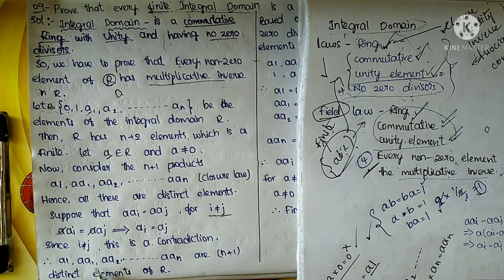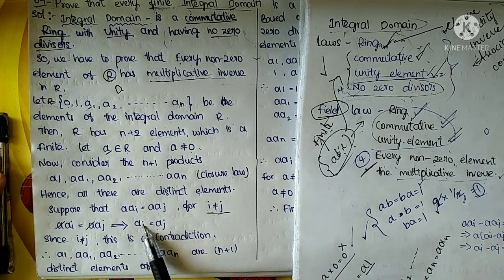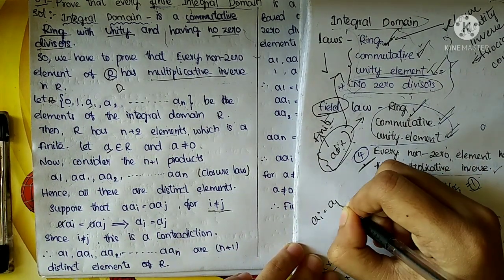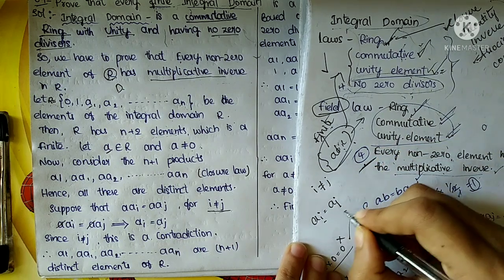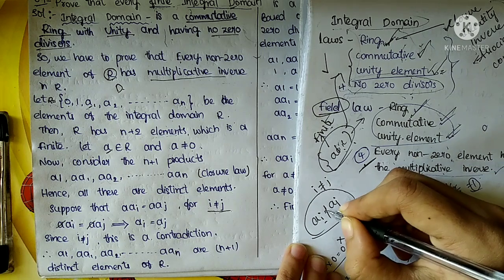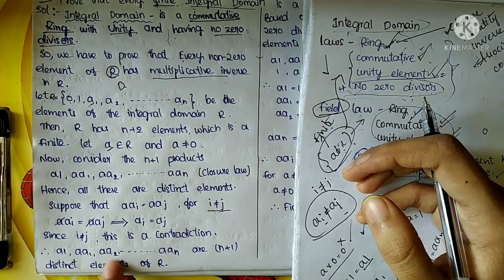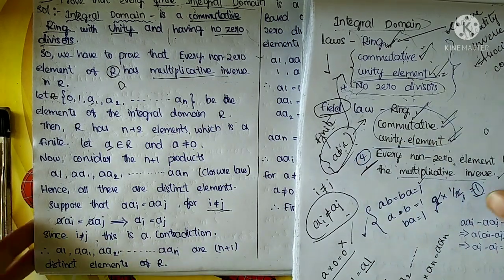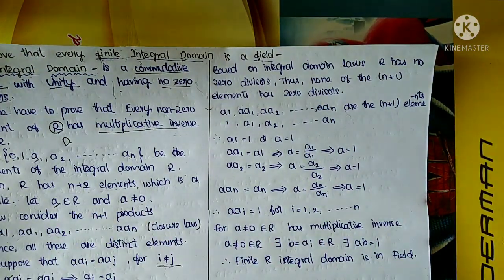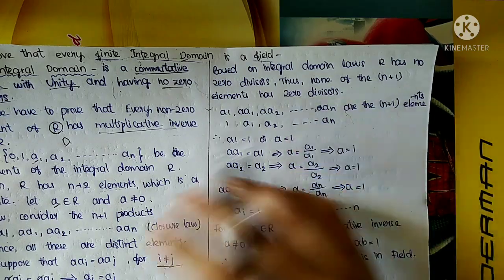Therefore a·a1, a·a2, and so on up to a·aN are N plus 1 distinct elements of R. Based on integral domain laws, R has no zero divisors. Thus none of the N plus 1 elements is a zero divisor.